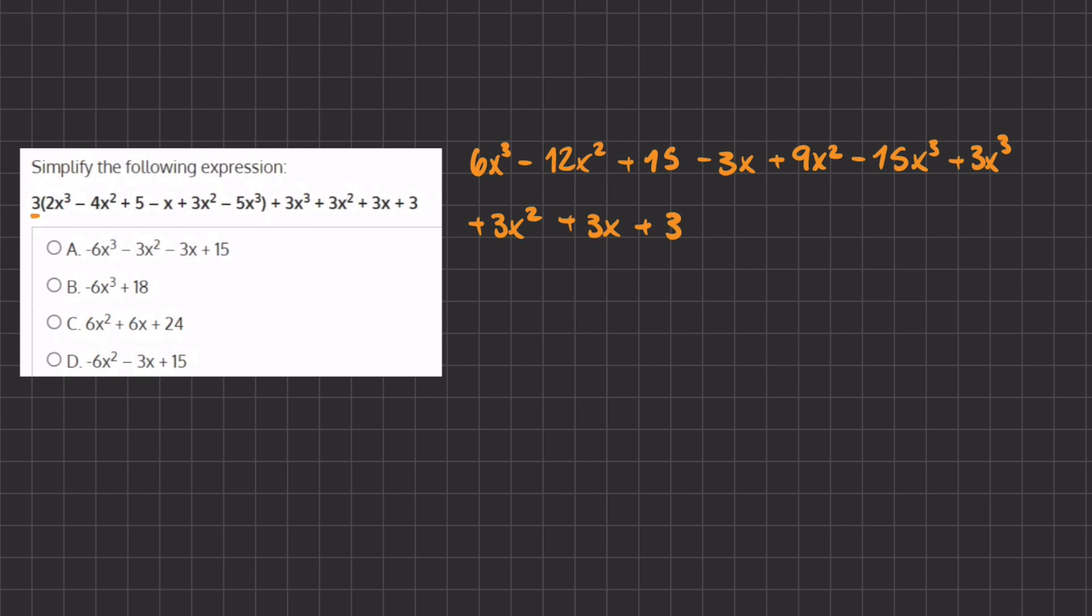So now we are going to add like terms together in order to further simplify. Let's start out with our highest exponent, which is x³ or x cubed. So now let's underline each one, we have here an x³.